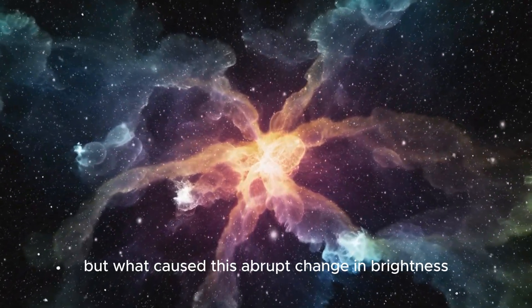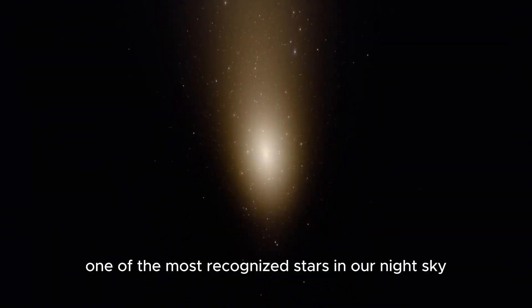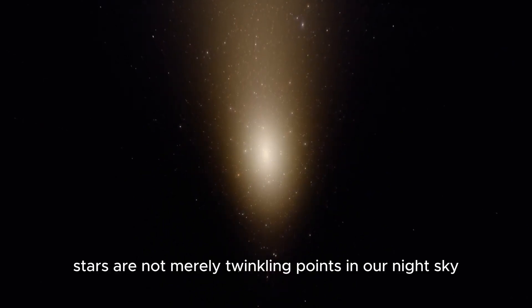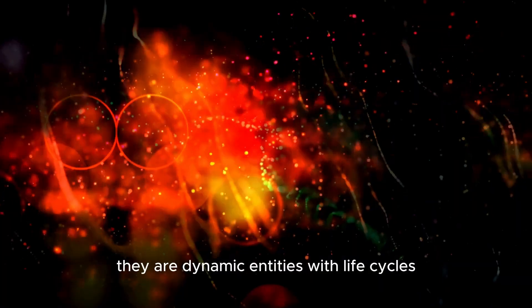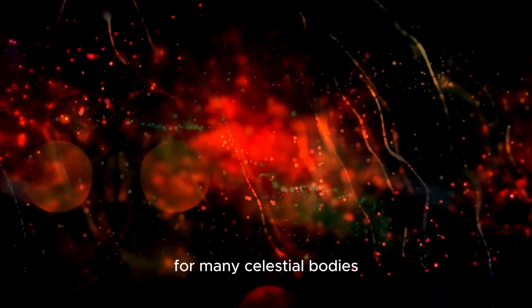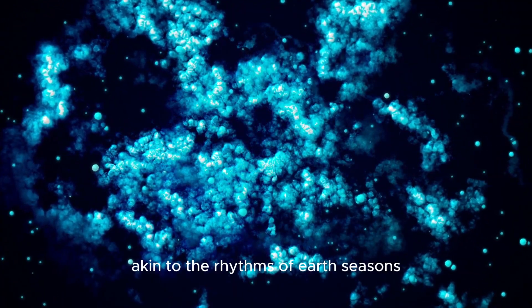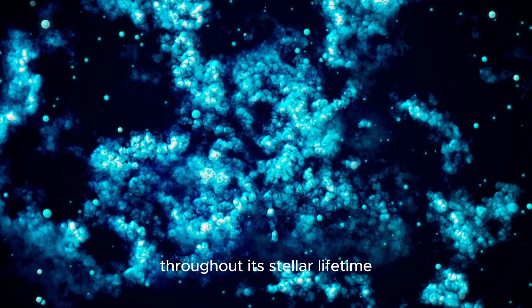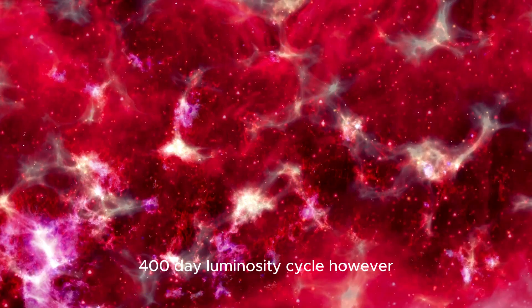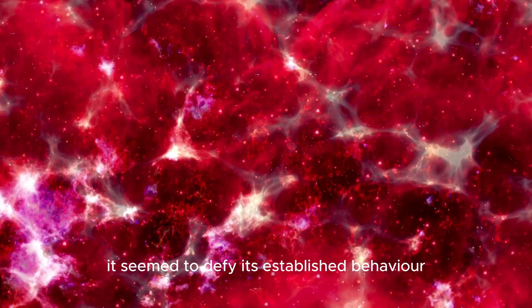But what caused this abrupt change in brightness? Why did Betelgeuse, one of the most recognized stars in our night sky, suddenly throw a cosmic curveball? Stars are not merely twinkling points in our night sky. They are dynamic entities with life cycles, activities, and mysteries of their own. For many celestial bodies, periodic brightness variations can be anticipated, akin to the rhythms of Earth seasons. Throughout its stellar lifetime, Betelgeuse has maintained a fairly consistent 400-day luminosity cycle. However, with the great dimming, it seemed to defy its established behavior, challenging our understanding of the celestial phenomena above.